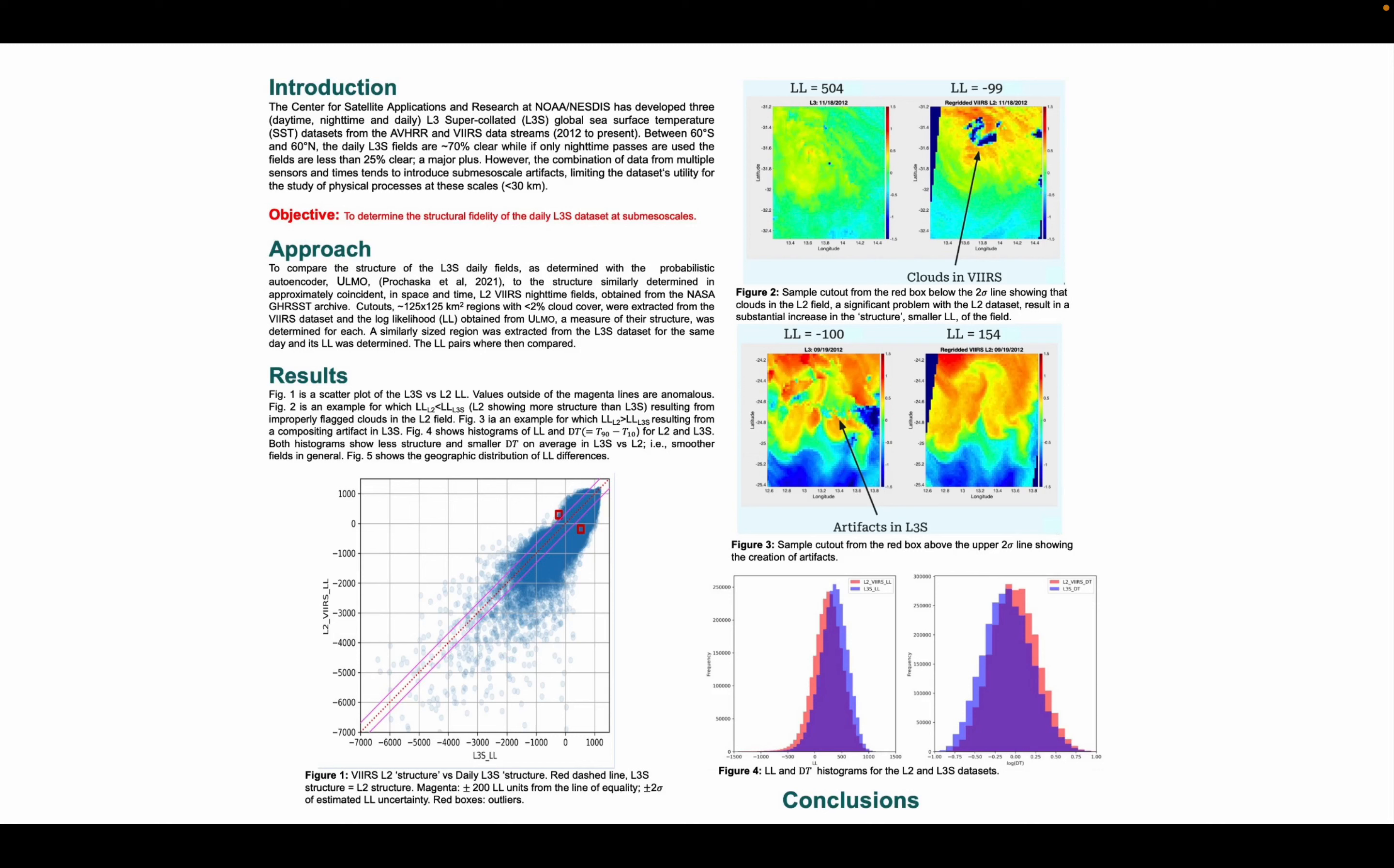In the top example, the log-likelihood of the VIRS cutout on the right is much lower than the L3S cutout, indicating more structure in the VIRS cutout. In the plotted field, we see this results from artifacts in the VIRS data, likely a cloud, where in this case the L3S model is doing well at reducing the effect of this cloud cover and smoothing out the field.